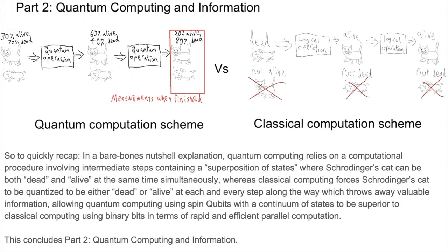So to quickly recap, in a bare-bones nutshell explanation, quantum computing relies on a computational procedure involving intermediate steps containing a superposition of states where Schrodinger's cat can be both dead and alive at the same time simultaneously, whereas classical computing forces Schrodinger's cat to be quantized to be either dead or alive at each and every intermediate step along the way, which throws away valuable information, allowing quantum computing using spin qubits with a continuum of states to be superior to classical computing using binary bits in terms of rapid and efficient parallel computation, at least theoretically. Thus, this concludes part 2: quantum computing and information.